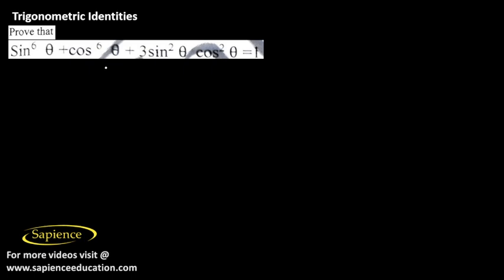Prove that sin to the power 6 theta plus cos to the power 6 theta plus 3 sin square theta cos square theta is equal to 1. We will prove this identity by simplifying the left hand side.